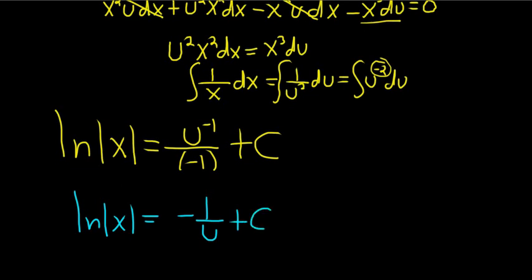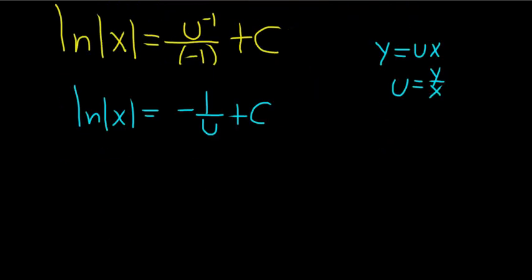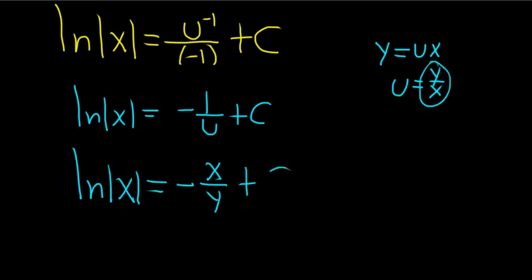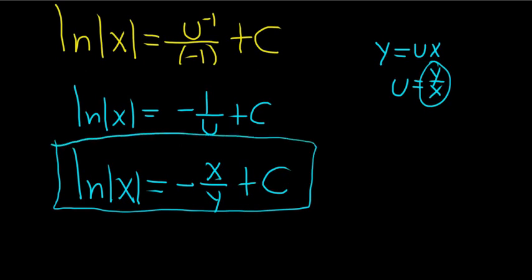So what's going on now? Well, we know that y is equal to ux. That means that u is equal to y over x. So 1 over u is just x over y. So this is going to be natural log absolute value of x equals minus x over y. We're flipping it. Plus c. And that, my friends, is the final answer. I hope this video has been helpful. That's it.